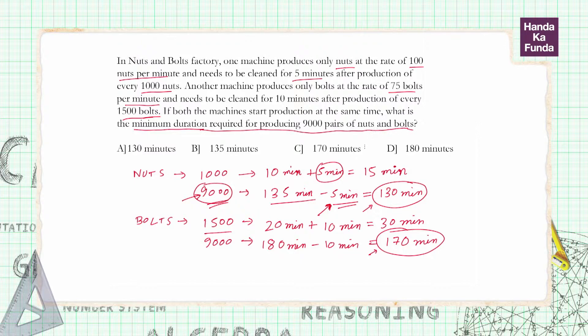We need to make nuts also, we need to make bolts also. In 130 minutes we can make 9000 nuts but we cannot make 9000 bolts, so we will take the higher of the two values which is 170, and our answer will become option C. Thank you.